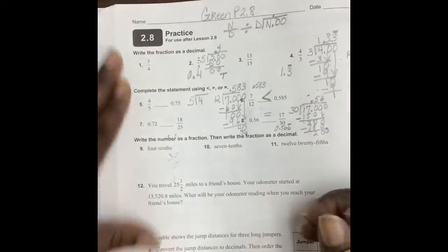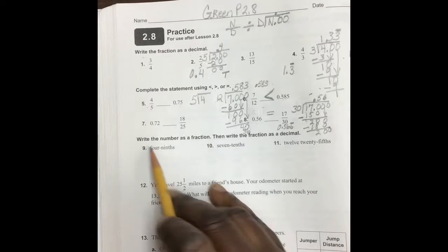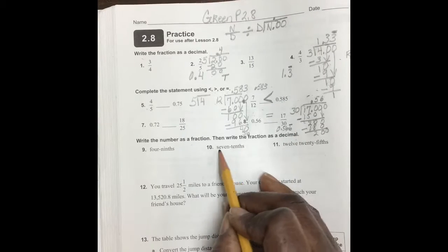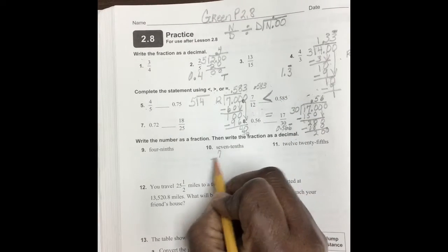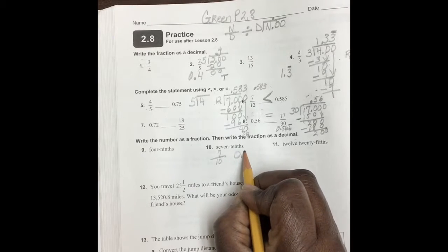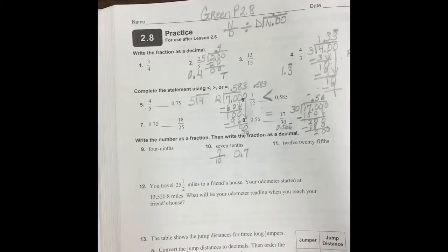Let's move forward. It says, write the number as a fraction, then write the fraction as a decimal. Here, we have 7 tenths. That's 7/10. And here, we have 0.7. The 7 is in the tenths place.